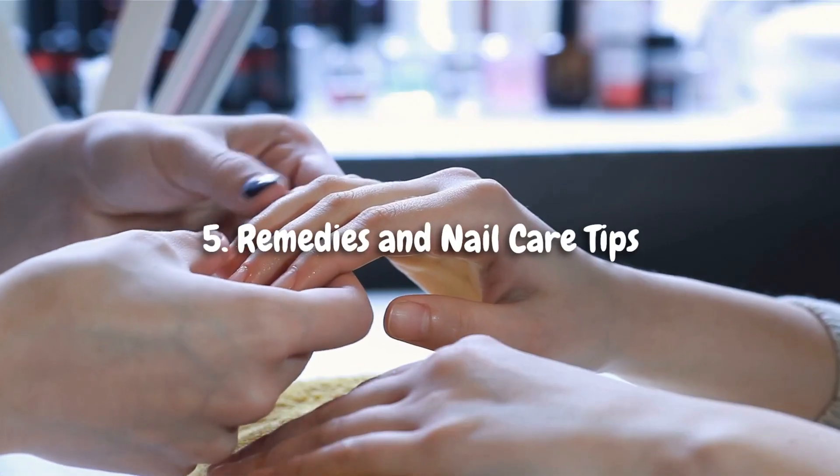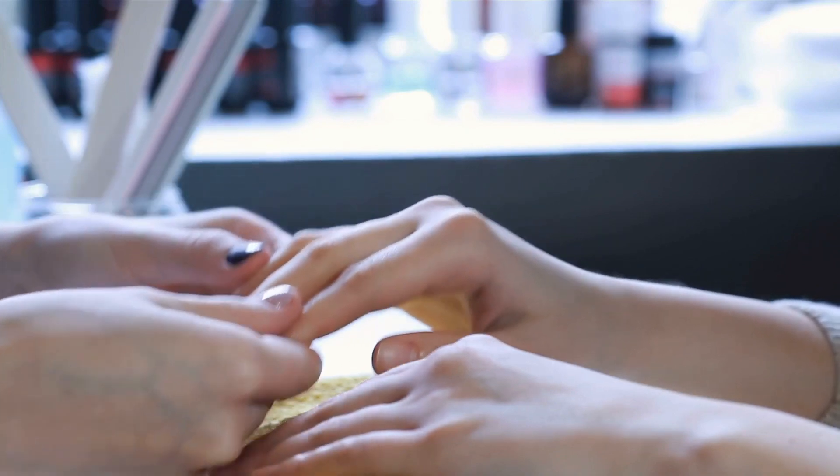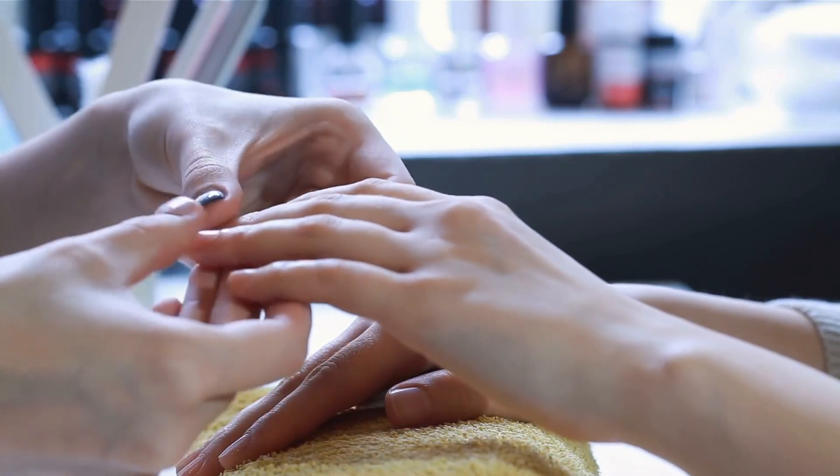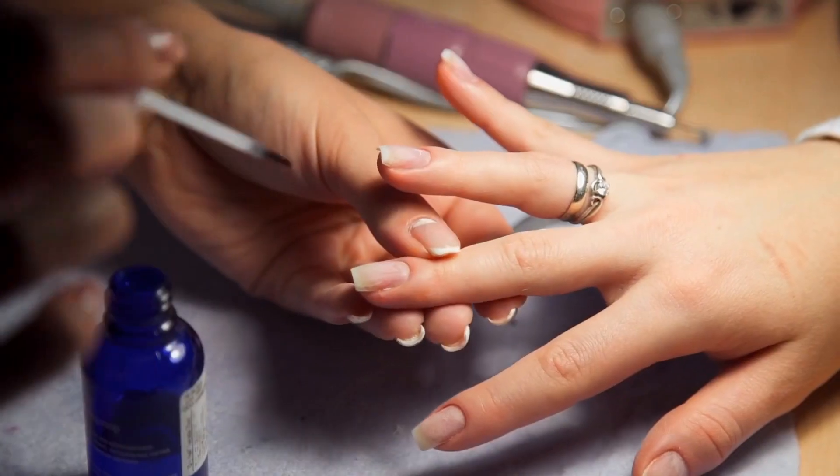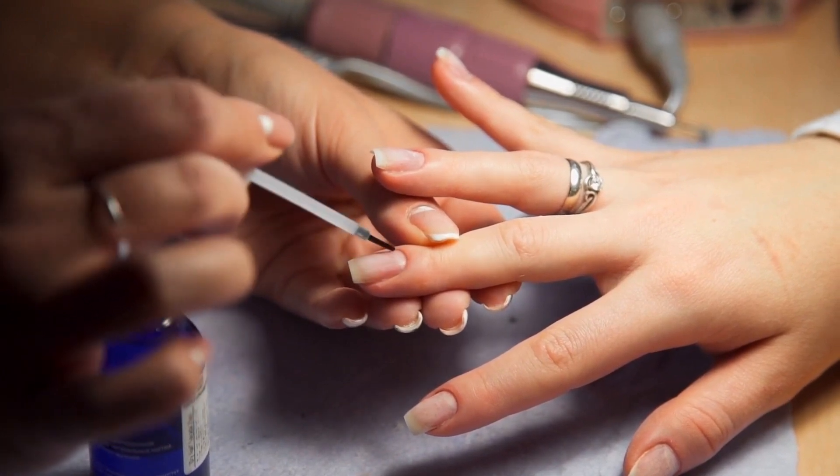5. Remedies and Nail Care Tips. Now that we understand the causes behind vertical lines on nails, let's explore some remedies and nail care tips to improve their appearance. Regular moisturization with nail-friendly oils or creams can help nourish the nails and minimize ridges.